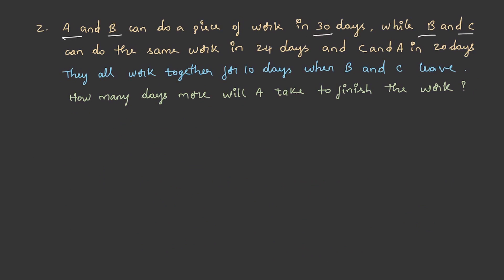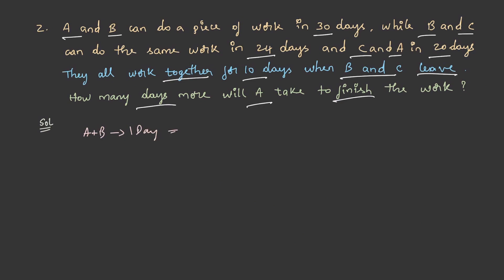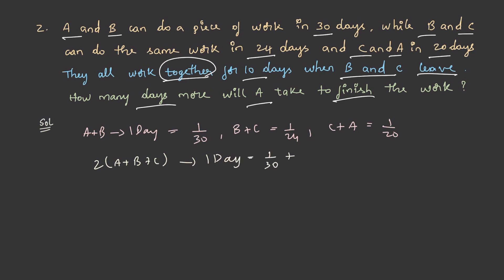They all work together for 10 days, and when B and C leave, how many more days will A take to finish the work? A plus B's one-day work is 1/30, B plus C's is 1/24, and C plus A's is 1/20. Since all three work together, 2 times (A plus B plus C)'s one-day work equals 1/30 plus 1/24 plus 1/20, which equals 1/8.